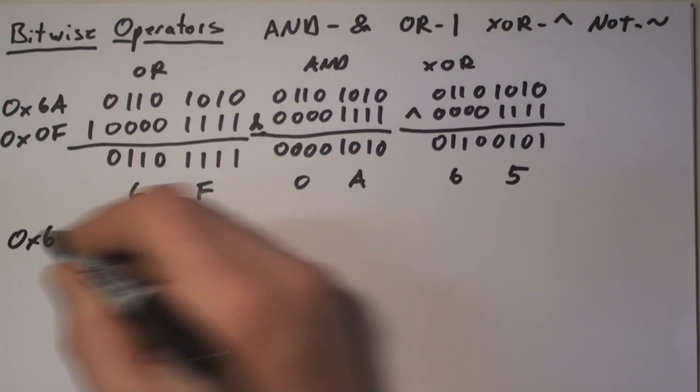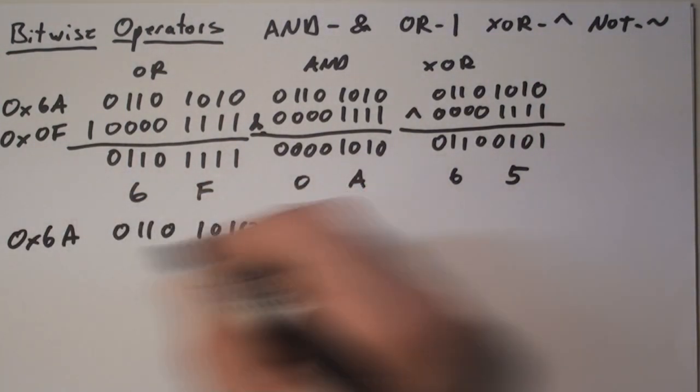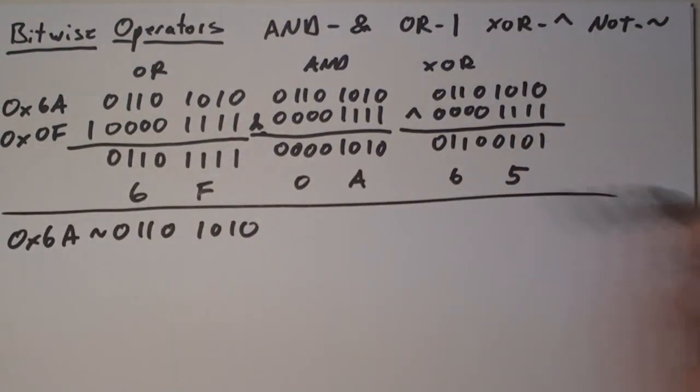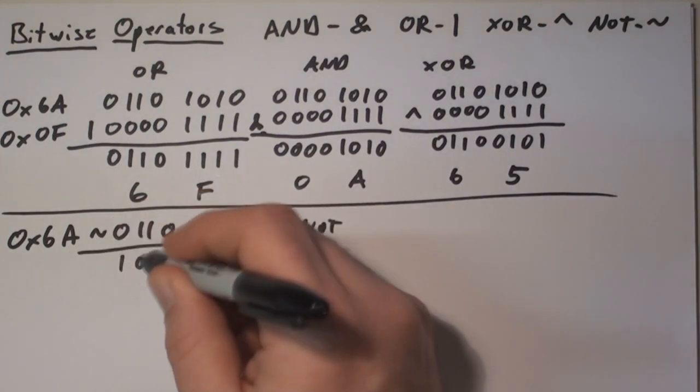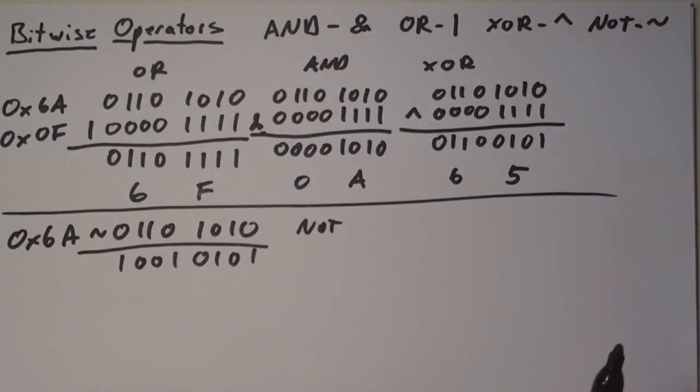So now I'm going to do an example of a NOT, and I'm going to invert the 6A. The 6A value inverted, if you have a 1, make a 0, and if you have a 0, make a 1. The hexadecimal value inverted is 95.